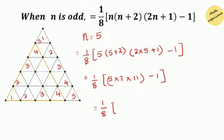So 1 over 8, let's solve what is inside the parenthesis first. So 5 times 7 equals to 35, 35 times 11 equals to 385.